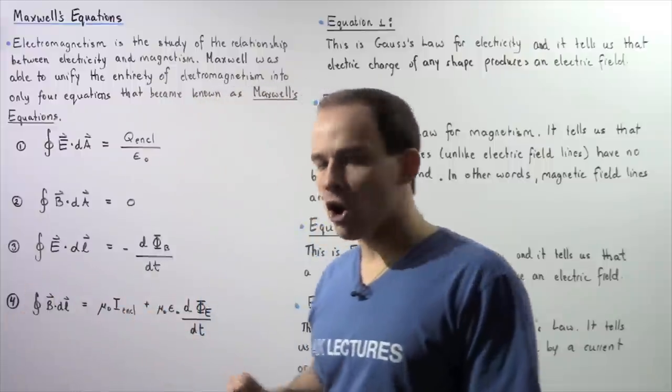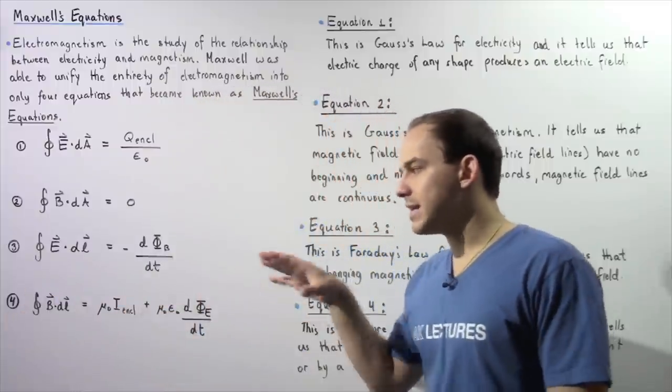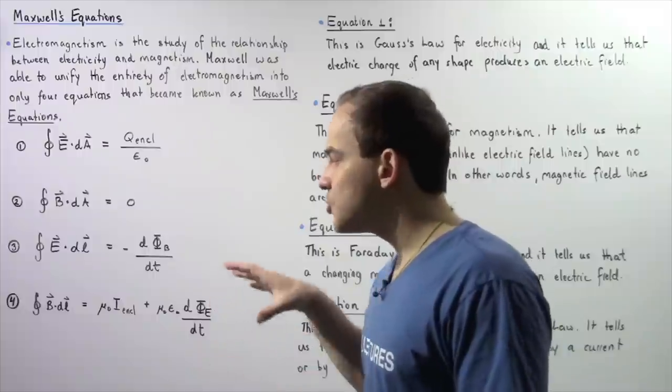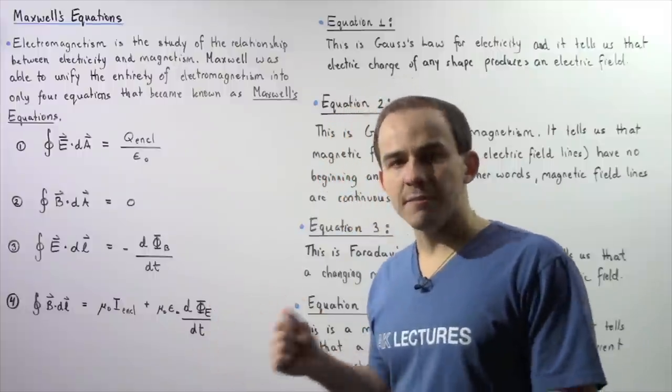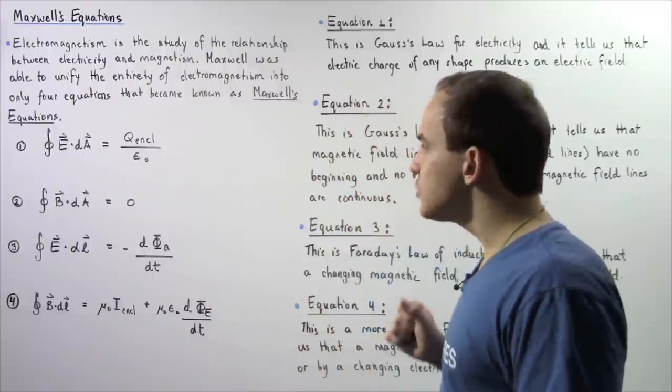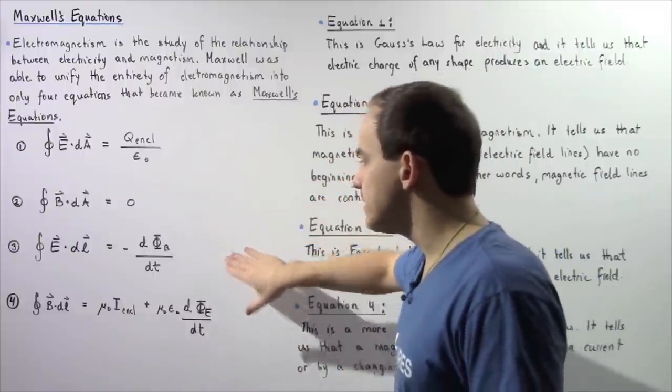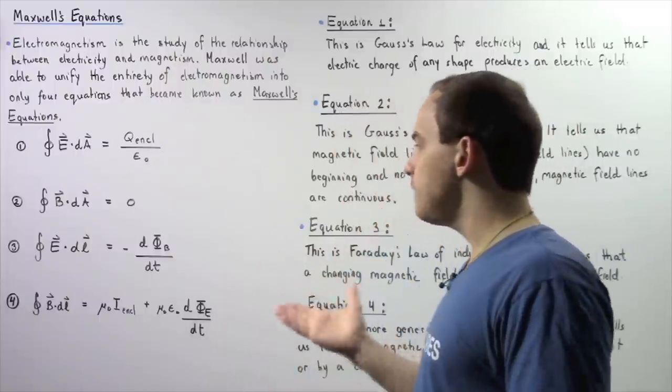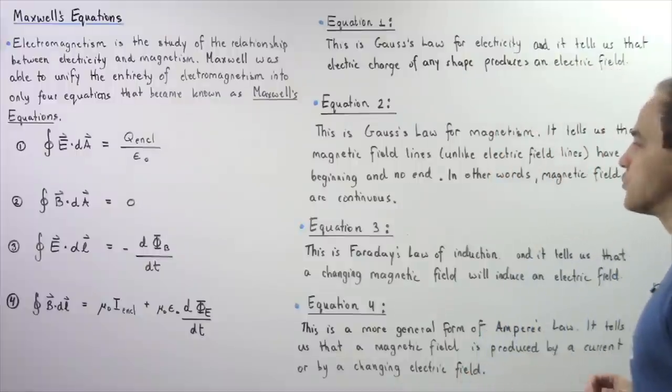Now equation four, which we're going to discuss and derive in the next lecture, is known as the general form of Ampere's law. Let's go through each one of these equations and summarize the implication of each one.